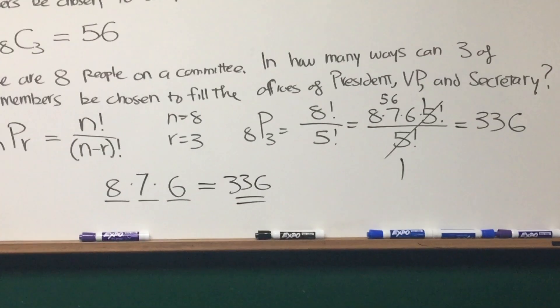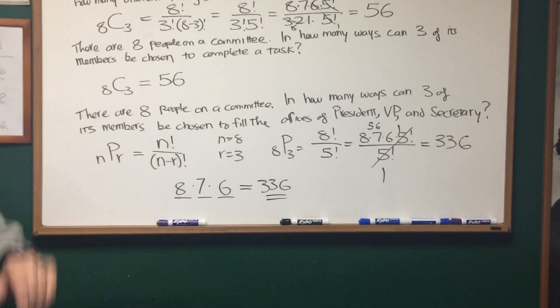And the answer is the same, 336. So there are some problems in combinations and one in permutation.